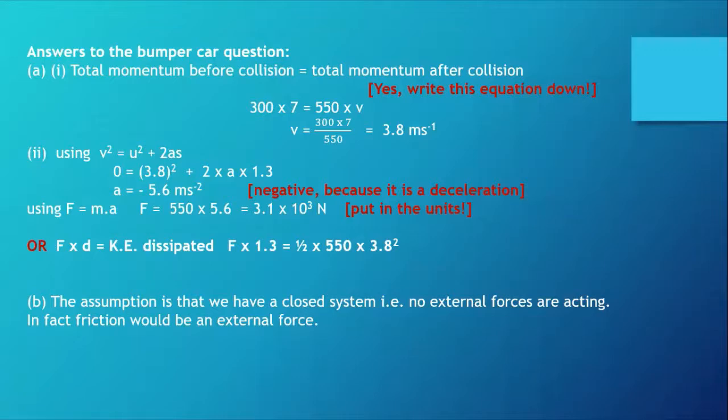Were your answers in agreement with mine? I certainly hope so. Part one: the total momentum before equals the total momentum after. In an exam question, do write it down. I've got 300 times 7 equals 550 times v. 550 of course is the combined mass. V is the velocity after the collision and that works out to be about 3.8 meters per second.